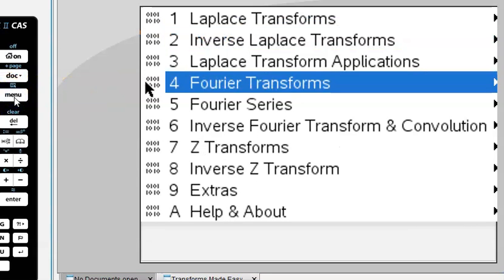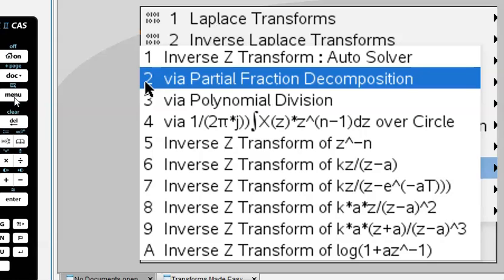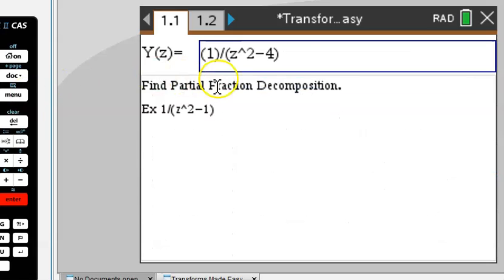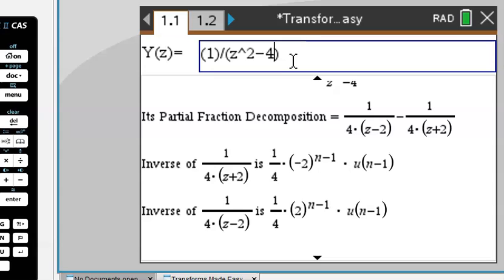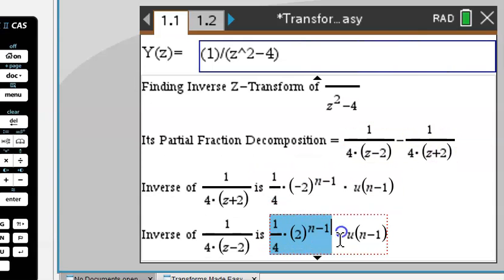If you like to use a specific method, you can choose partial fraction decomposition. Enter your given fraction, the decomposition is done for you right here. And then we're going to find the inverse of each fraction, which is shown here and shown right here.